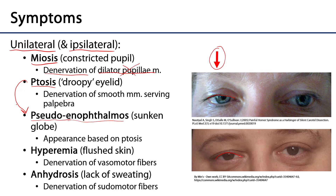The other possible symptoms include unilateral hyperemia, or flushing of the skin. This is the result of denervation to the vasomotor fibers — the sympathetic fibers innervating the smooth muscles within the lining of the vasculature and capillary beds. When these smooth muscles are relaxed, blood flows freely and the skin is more flushed.